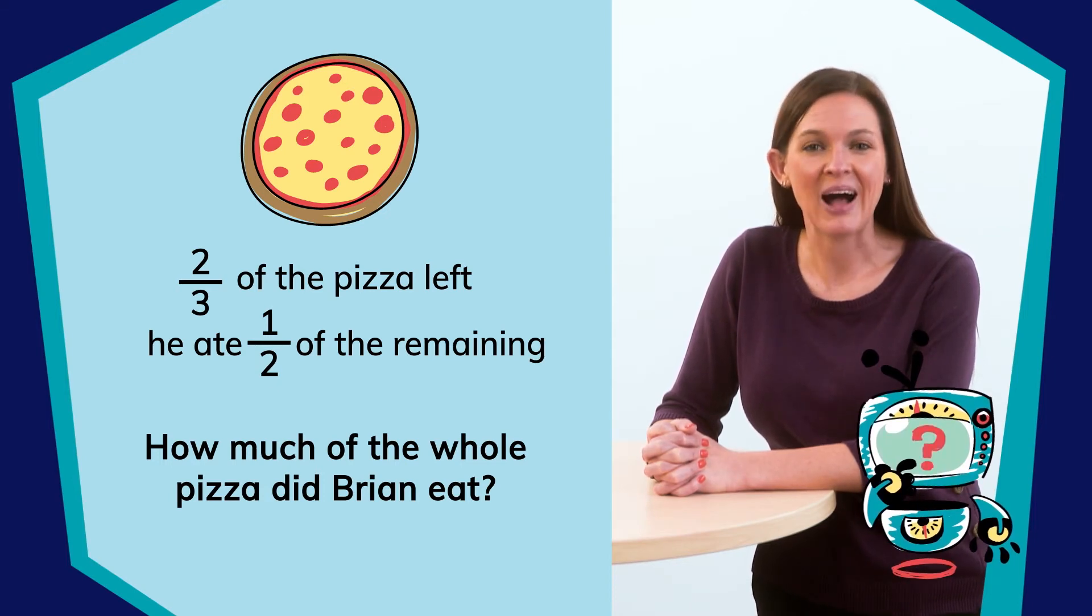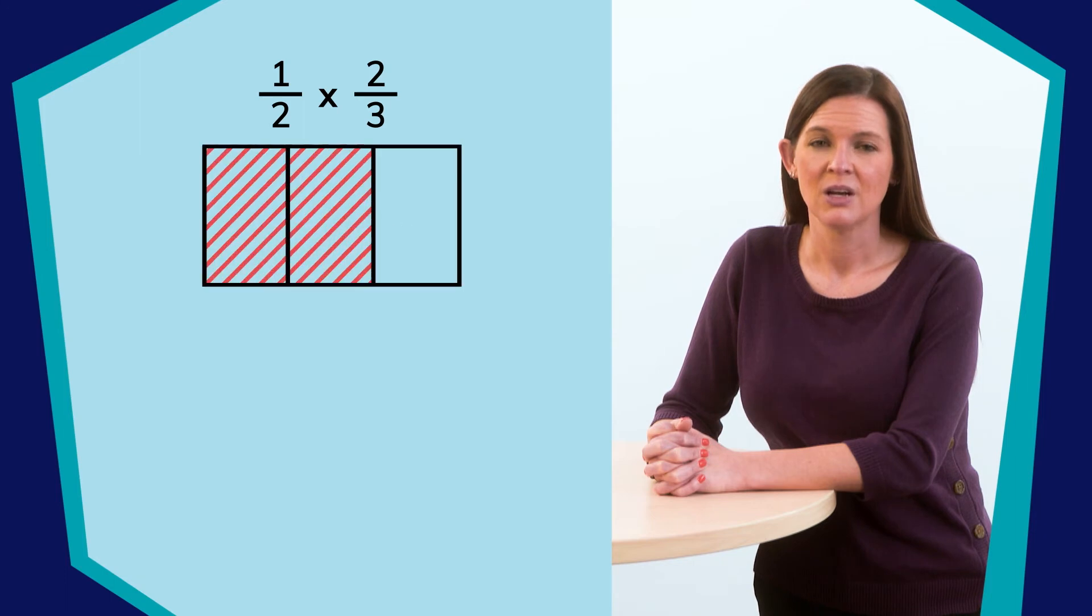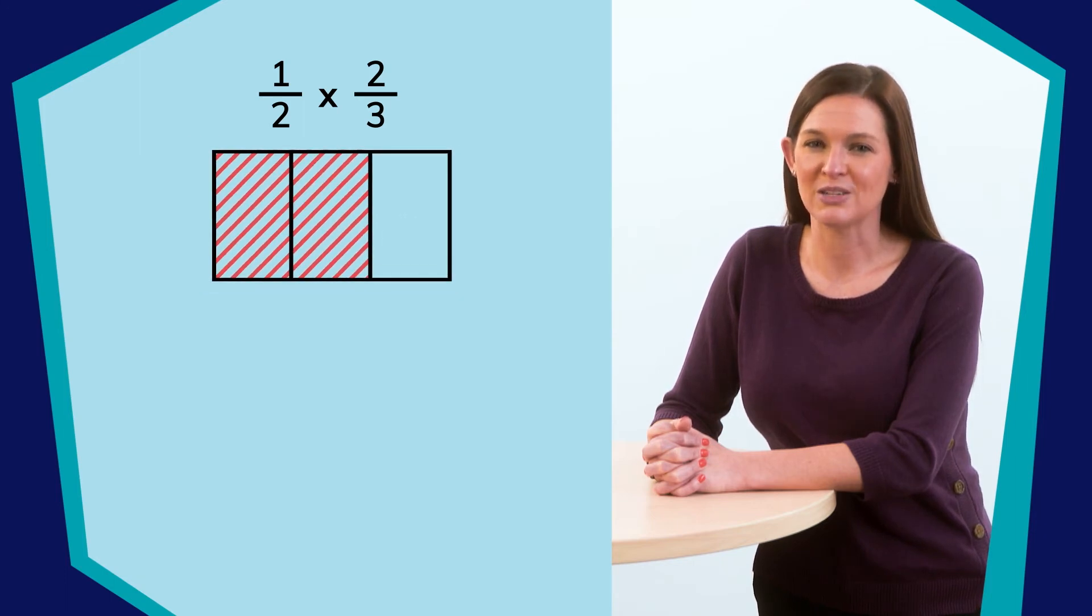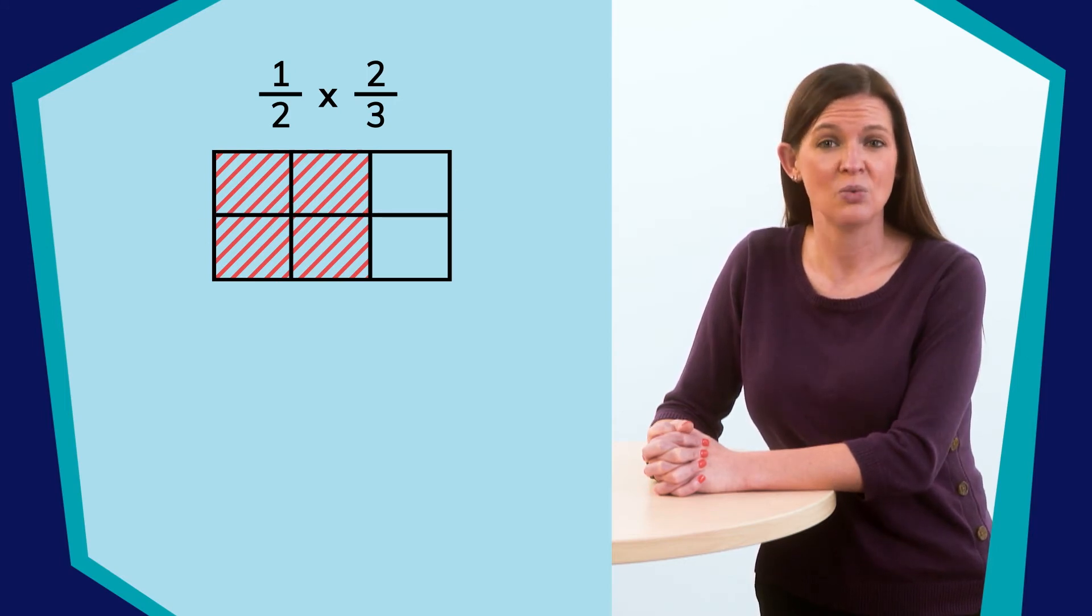Great, we can multiply. So, we have one-half of two-thirds, or one-half times two-thirds. Let's draw an area model to help us visualize the multiplication. So, we have two-thirds of a pizza represented here. Now we need to find one-half of it. So, we divide the whole into a half and shade one of them. How many pieces did multiplying two-thirds by one-half create?